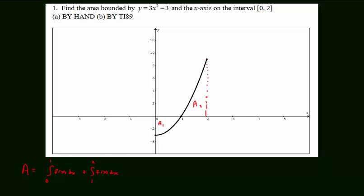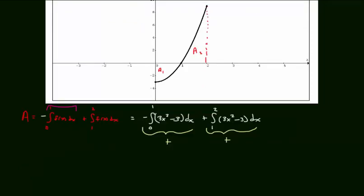This first integral expression would return a negative value because the function is below the x-axis. So, what I need to do is put a negative in front of it. I want the opposite of the negative quantity. So, this is going to equal negative the integral from 0 to 1 of the function 3x squared minus 3 dx plus the integral from 1 to 2, 3x squared minus 3 dx. These will both return now positive values.